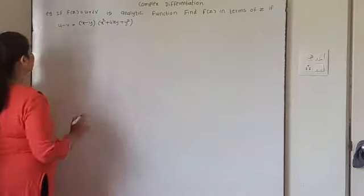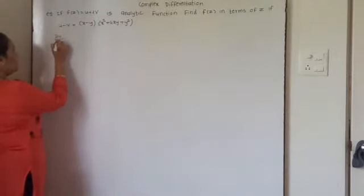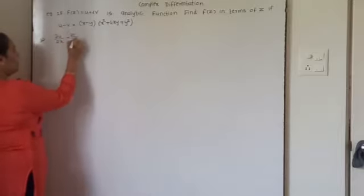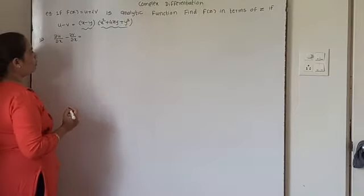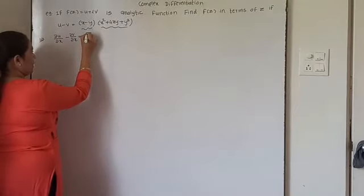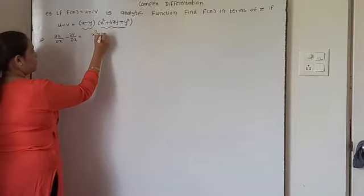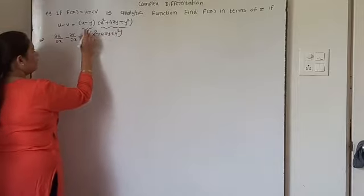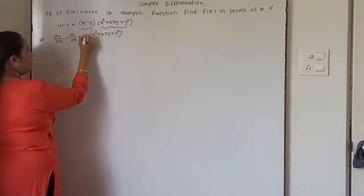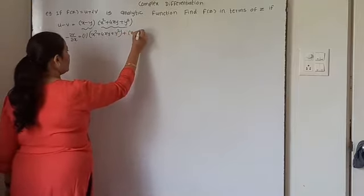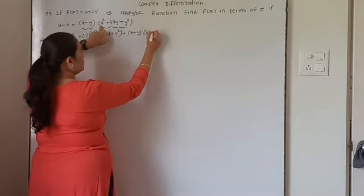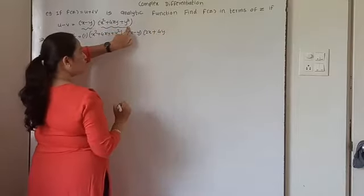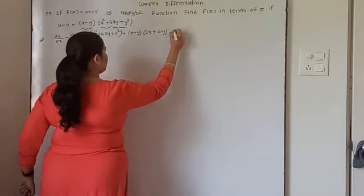First we will differentiate this partially with respect to x and partially with respect to y. If I differentiate this partially with respect to x, you will get ∂u/∂x minus ∂v/∂x equal to. Since both factors are functions of x, we have to use the product rule. Keeping (x squared plus 4xy plus y squared) as it is, the derivative of (x minus y) is 1, plus (x minus y) as it is, and the derivative of the second bracket with respect to x: derivative of x squared is 2x, plus derivative of 4xy is 4y, and y squared gives 0. These are equation number 1.